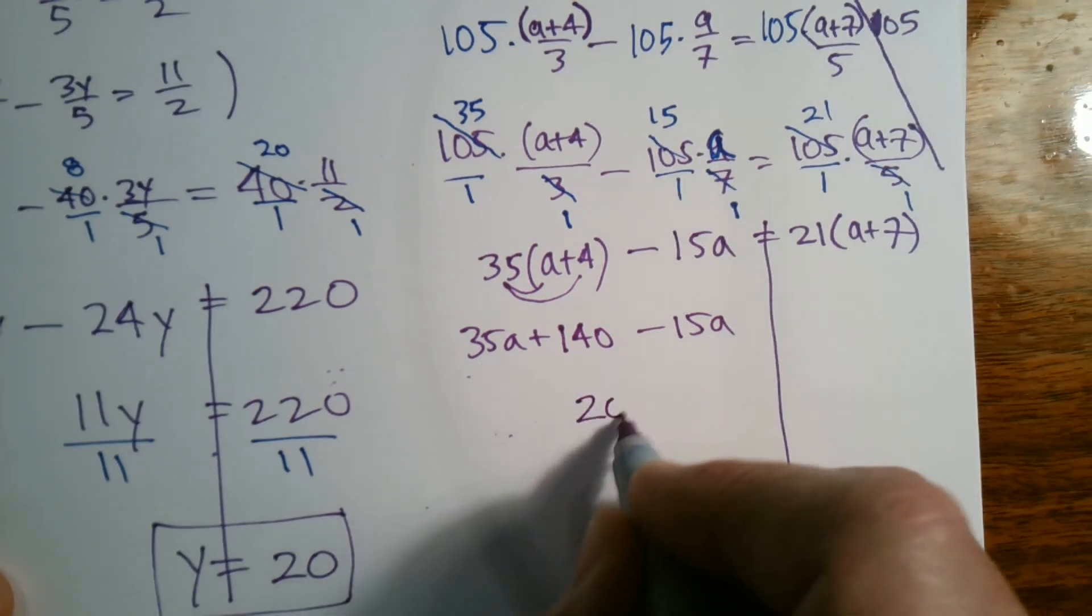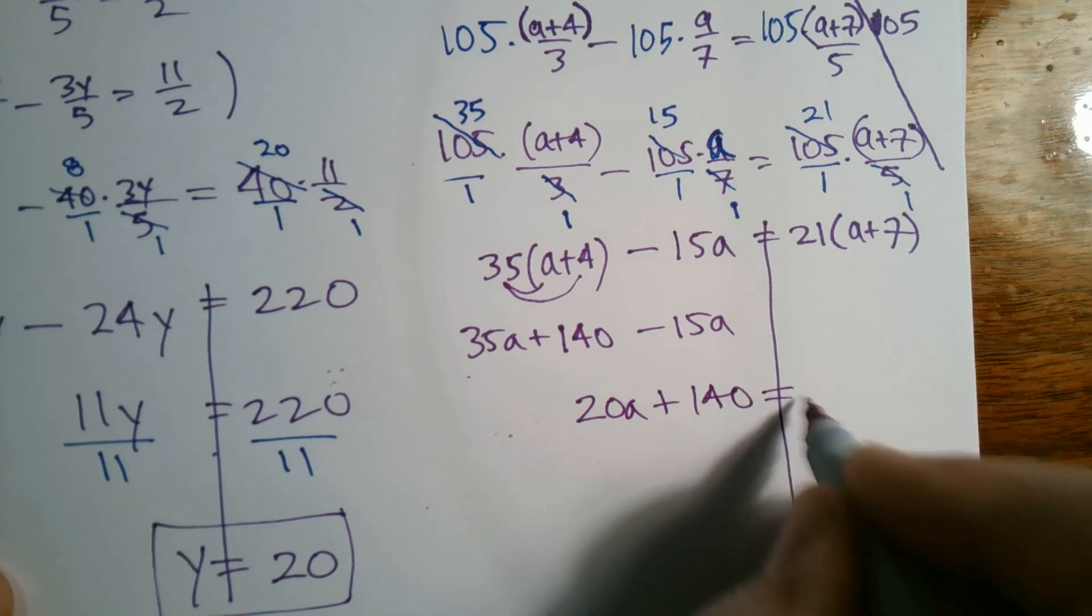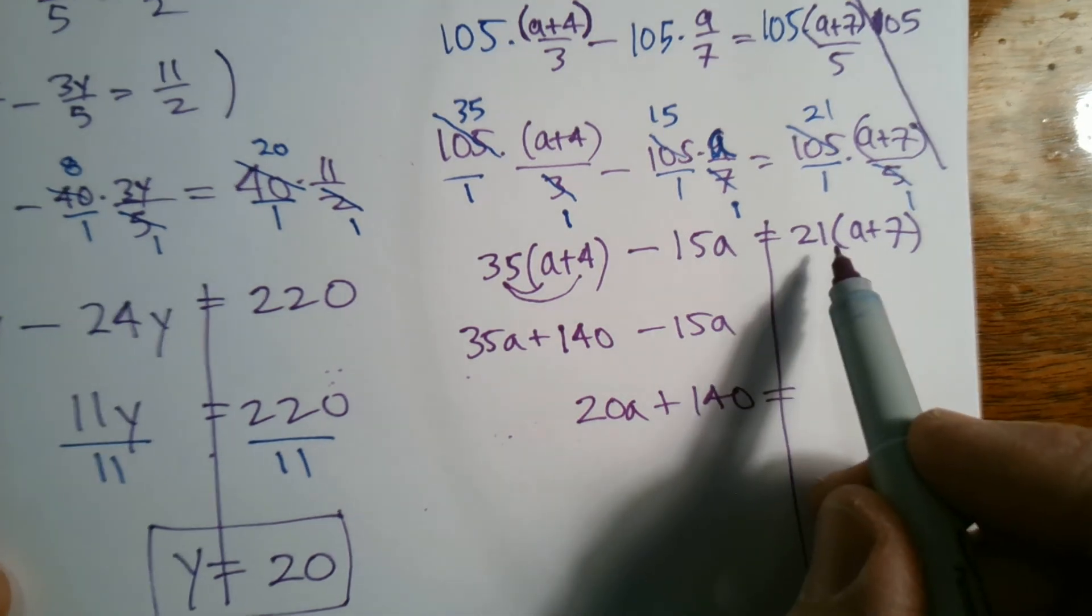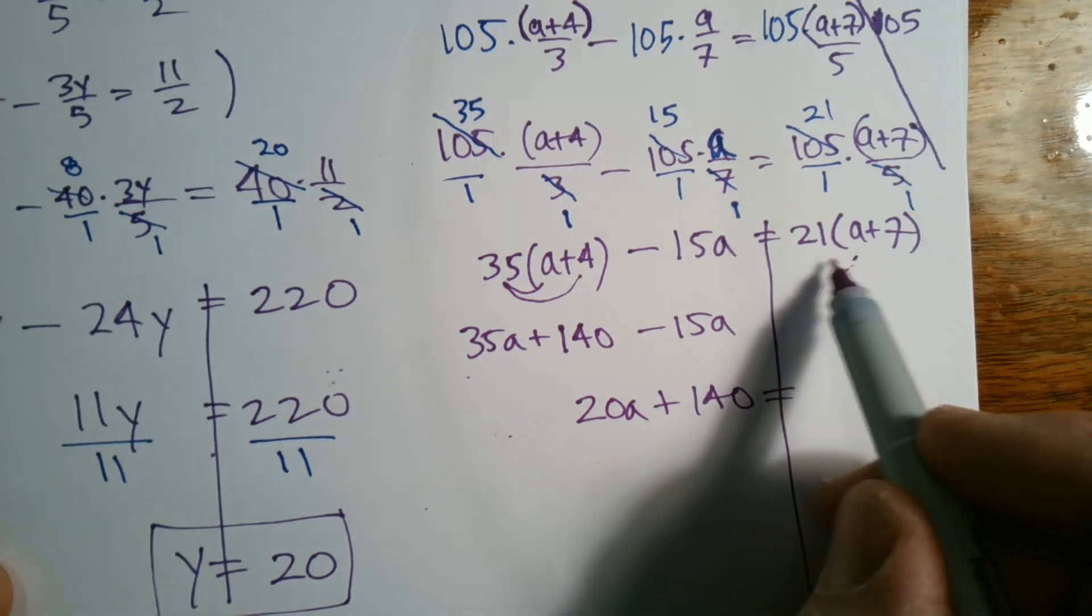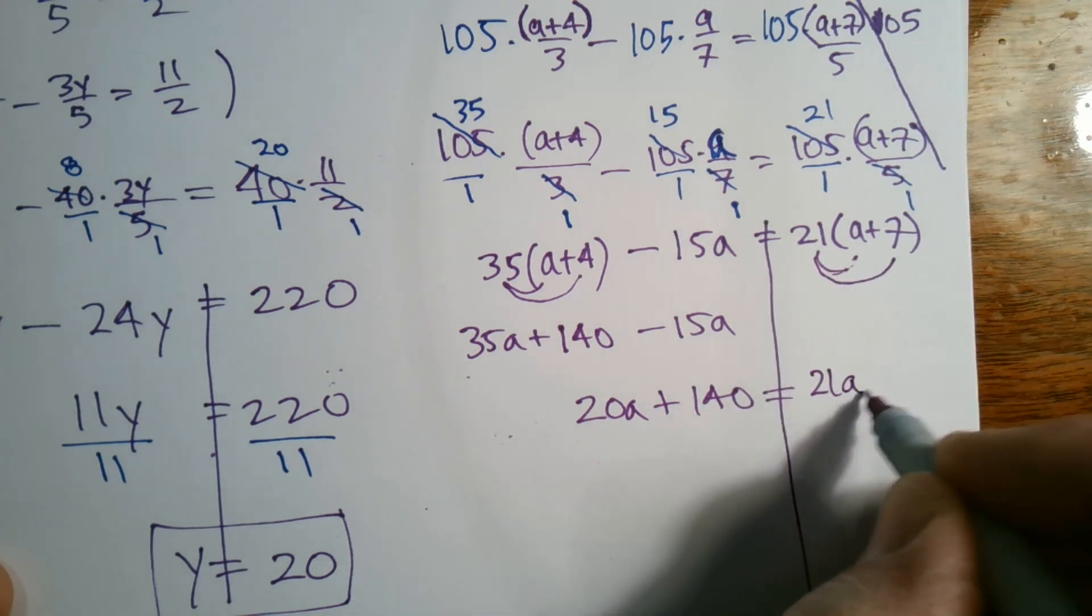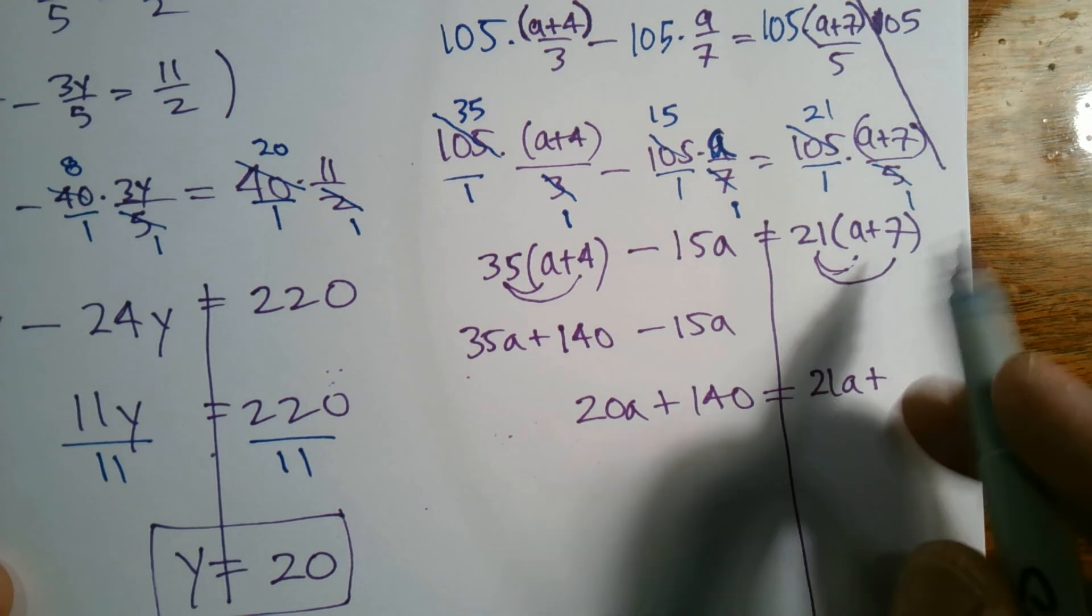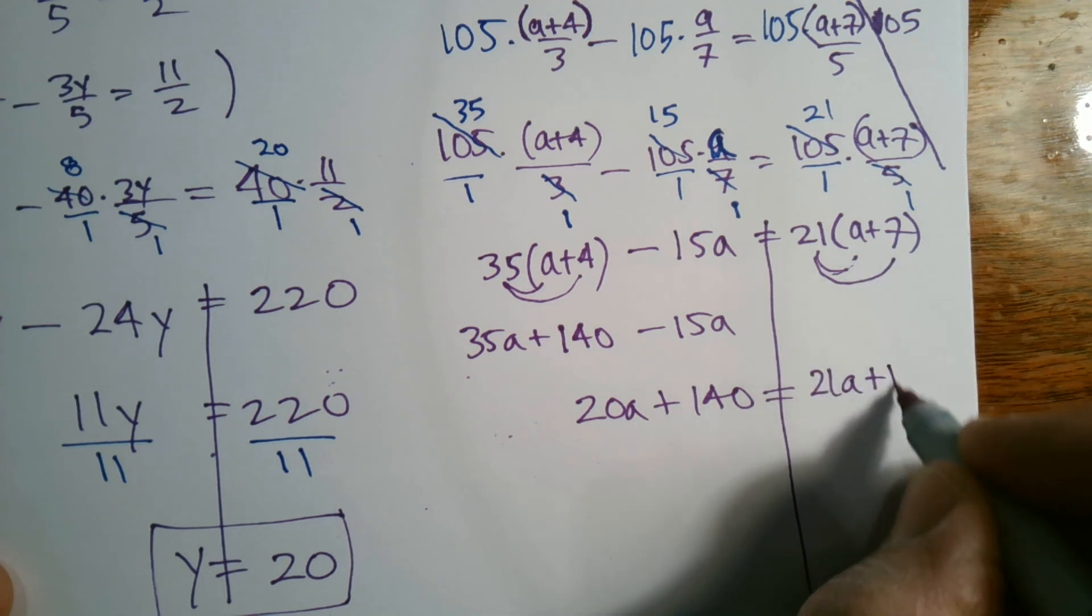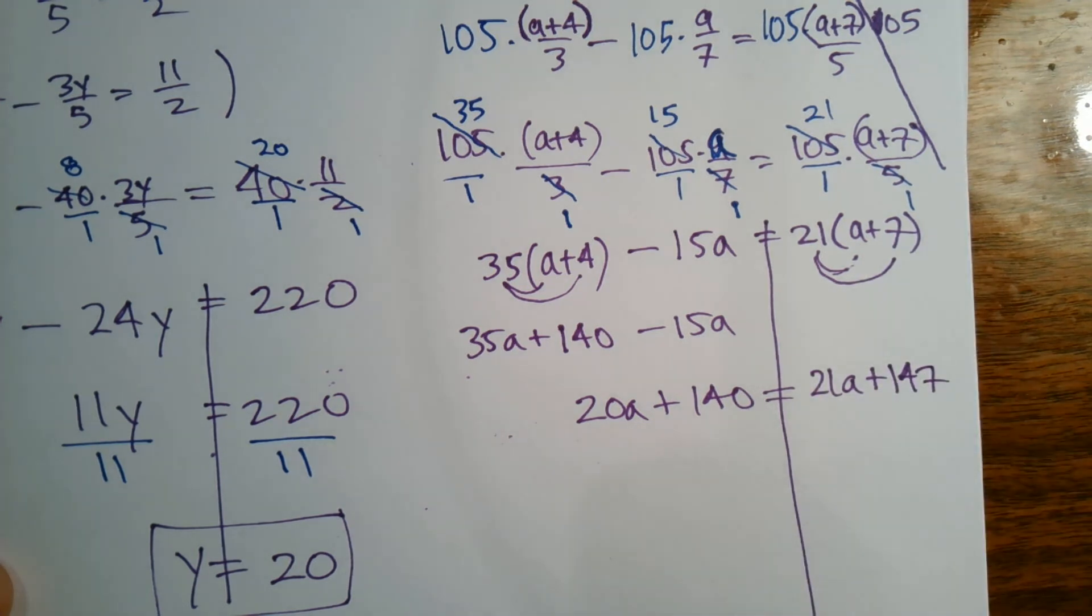So I still can simplify here because I have 35a and minus 15a, so that becomes 20a plus 140. So now it's all simplified on this side. Over here, distribute the 21: 21 times a and 21 times 7. So we have 21a plus, that becomes 147.